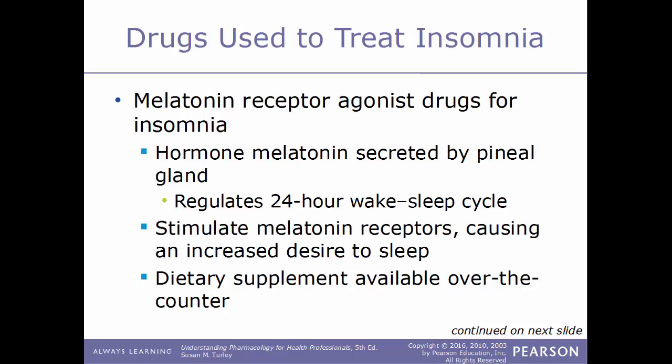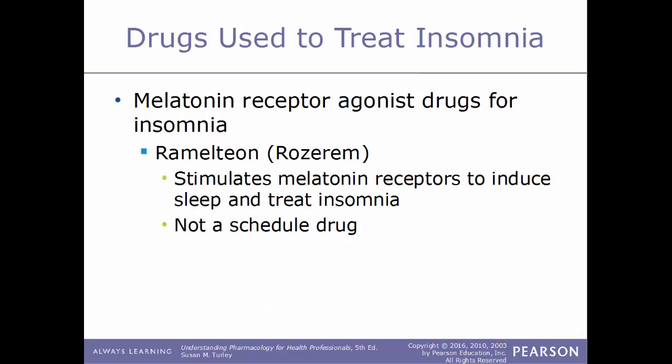Another kind are melatonin receptor agonist drugs. The hormone melatonin is secreted by the pineal gland and regulates the 24-hour wake-sleep cycle. These agonist drugs stimulate melatonin receptors, causing an increased desire to sleep, and are available as a dietary supplement over the counter. An example is ramelteon (Rozerem), which stimulates melatonin receptors to induce sleep and is not a scheduled drug.